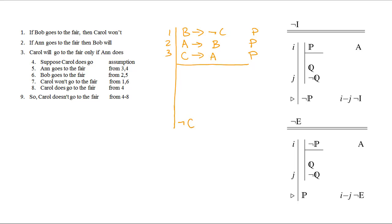If we move in exact parallel to the English argument, we'll suppose, and when we're doing a derivation, that amounts to making an auxiliary assumption to start a subderivation. Suppose that Carol goes to the fair. Well, obviously, 3 and 4 and an arrow elimination will give us Ann goes to the fair.